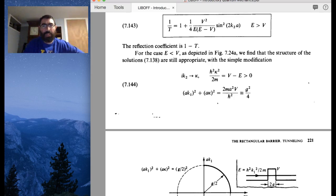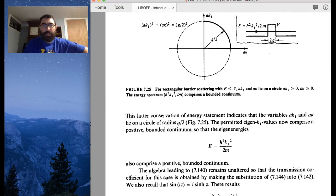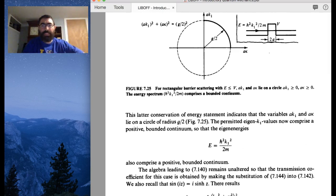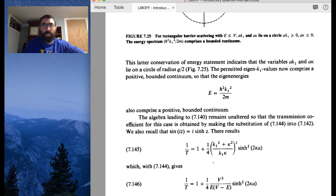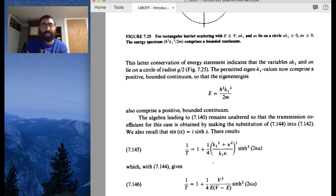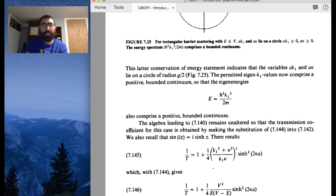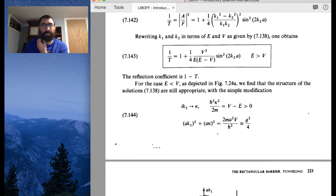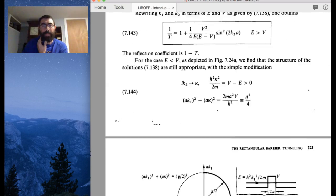And so you now replace basically IK2 with kappa. So basically, instead of redoing the whole derivation, we can just replace the K2 with the kappa.